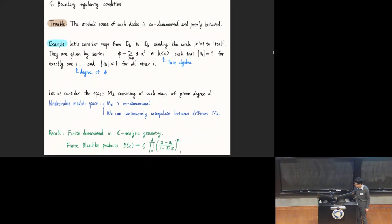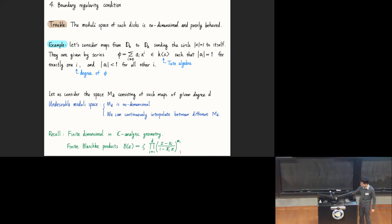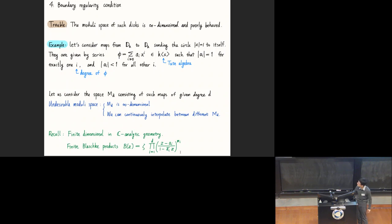We see that this situation is really different from complex analytic geometry. In complex analytic geometry, all such maps are given by so-called finite Blaschke products, which is the easy corollary of the Schwarz Lemma. In particular, all such maps are determined by their zeros—given by finitely many parameters.